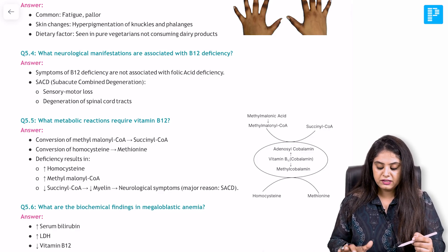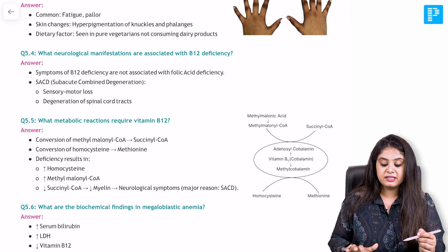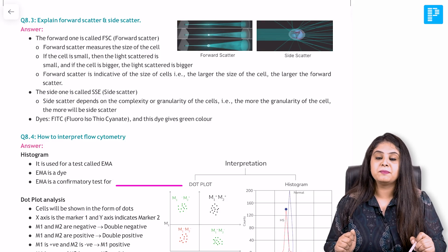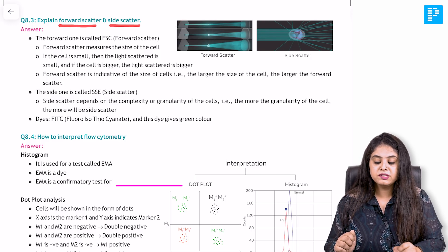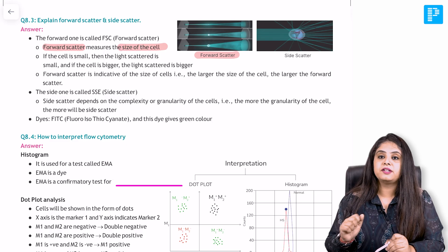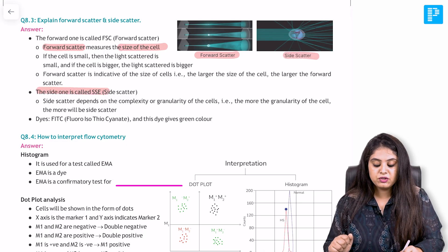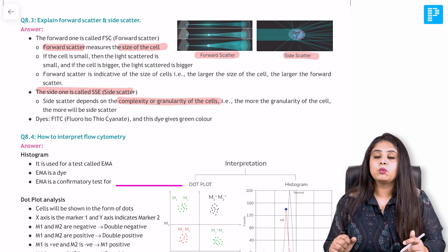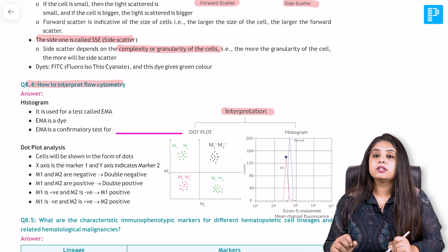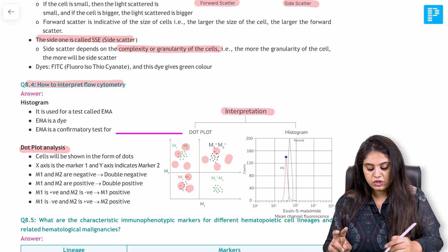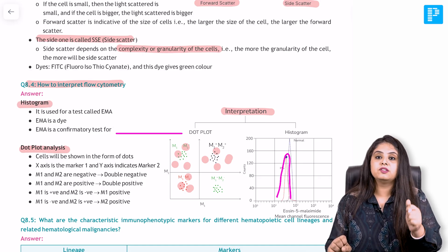Let's go to one of the last topics — flow cytometry, very important for INICET. The notes ask: in flow cytometry, what is forward scatter and what is side scatter? Forward scatter depends on the size of the cell; side scatter depends on the complexity or granularity of the cells. A previous year INICET question: what are the two ways of interpreting flow cytometry results? One is dot plot analysis — shown as dots — and the other is the histogram, shown as graphs. This was asked in previous year papers.